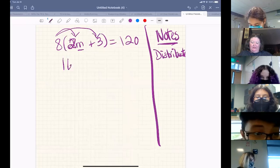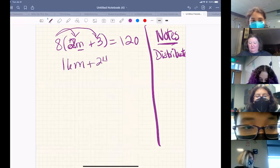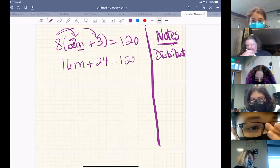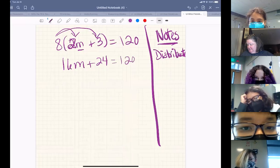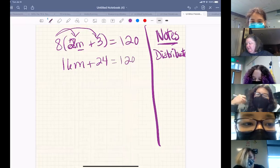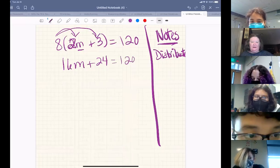So that's going to be 16M plus 24 equals 120. In the chat, let me know if you want me to explain where I got any of those numbers.